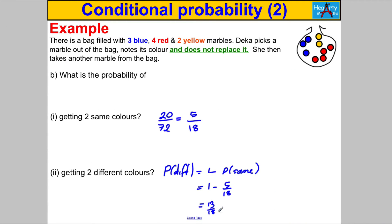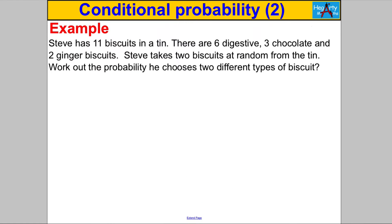Okay, next question — pause the video and have a go. Steve has 11 biscuits in a tin: six digestive, three chocolate, and two ginger biscuits. Steve takes two biscuits at random from the tin. Work out the probability he chooses two different types of biscuit. There's a slight difference here — this isn't exactly the same as taking marbles one at a time; you may take two biscuits at once.